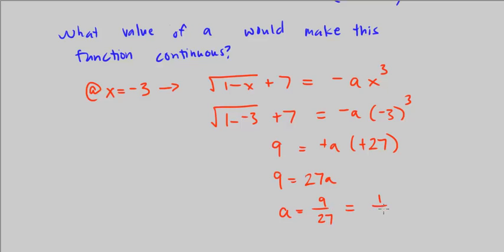Simplify that. That's just 1 over 3. So a has to be 1 over 3 for our function f of x to be continuous.